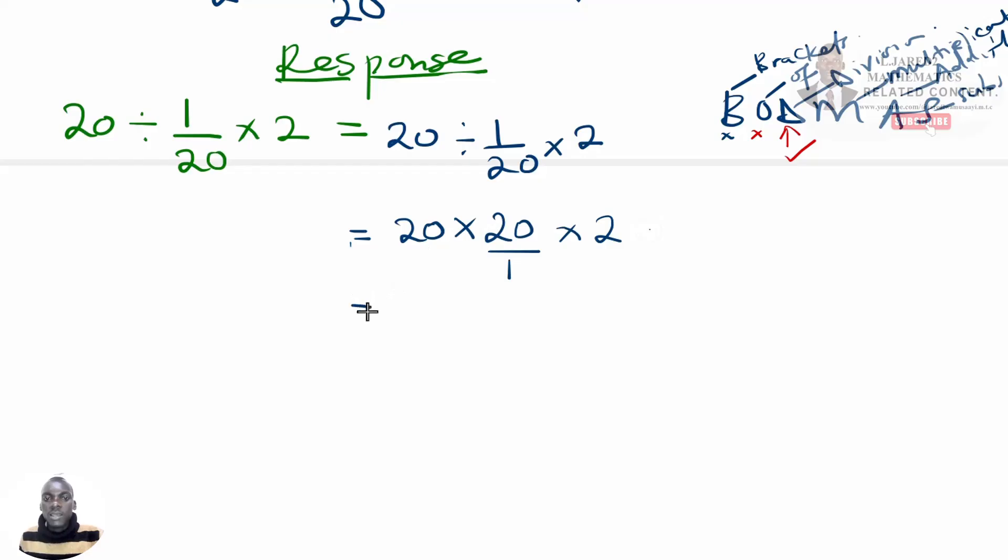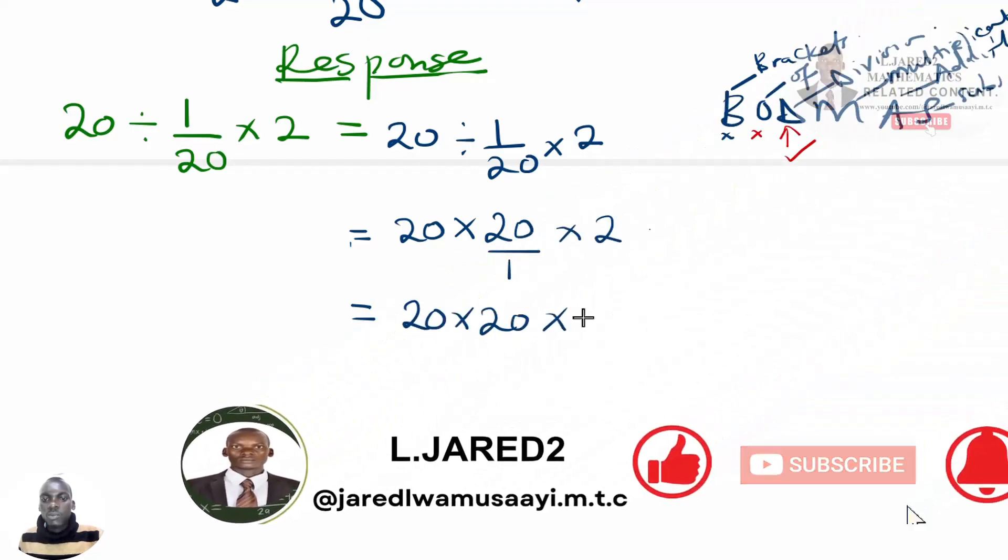So from here, we can see that we have multiplication throughout in this expression. So this division is, we are seeing that the denominator is 1, meaning that it remains the same. So we have 20 multiplied by 20, then multiplied by 2.